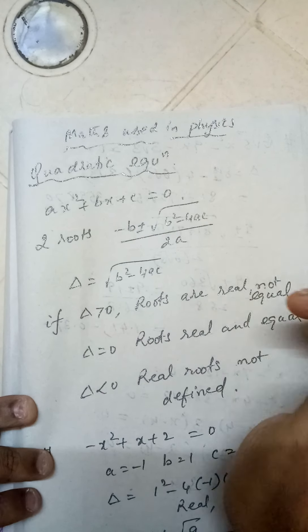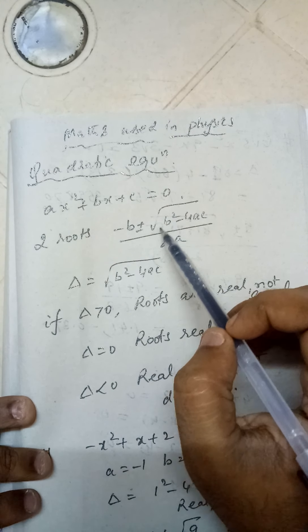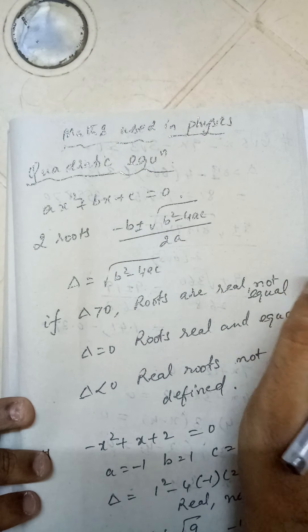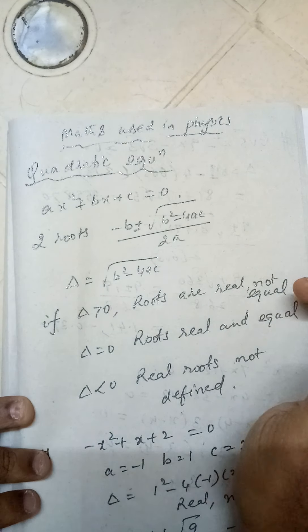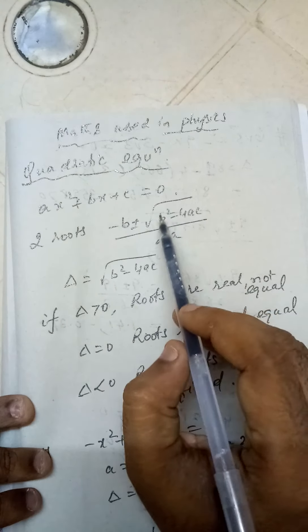The solution will be x = (-b ± √(b² - 4ac)) / 2a. Here a, b, c are the coefficients of the unknown x, which are constants. This √(b² - 4ac) is called discriminant, denoted by Δ.